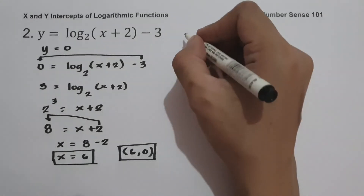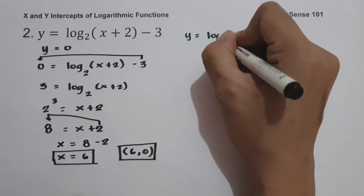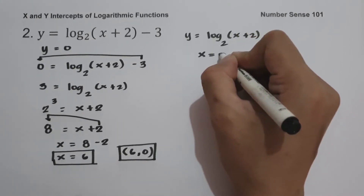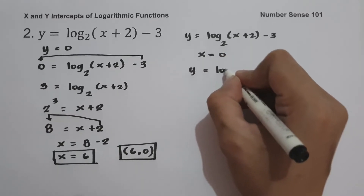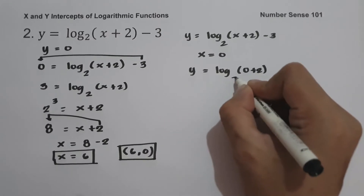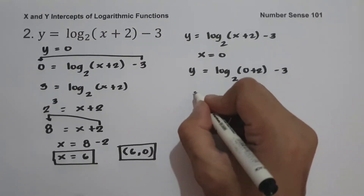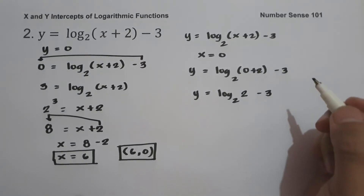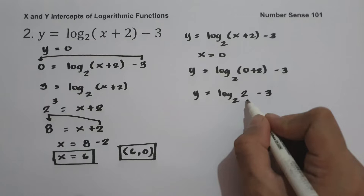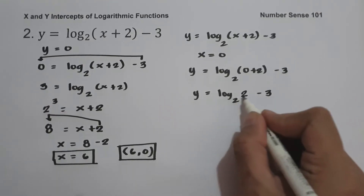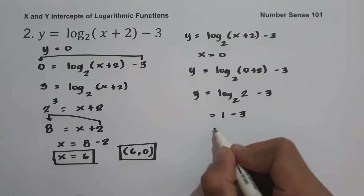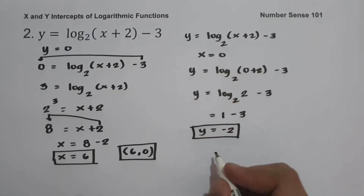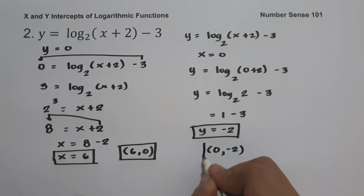And for our y-intercept, we have y equals log(x + 2) base 2 minus 3, and let us set x equal to 0. So we get y equals log(0 + 2) base 2 minus 3, which simplifies to y equals log 2 base 2 minus 3. Since our argument is greater than 0, we simplify: log 2 base 2 is 1, so y equals 1 minus 3, which is negative 2. Therefore, our y-intercept is (0, −2).